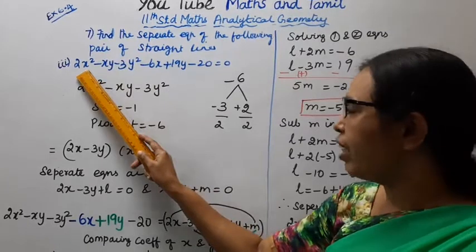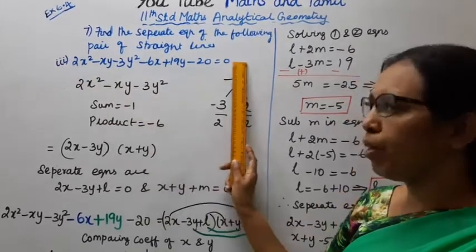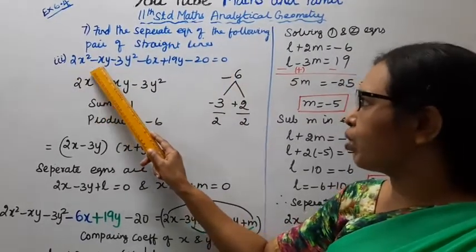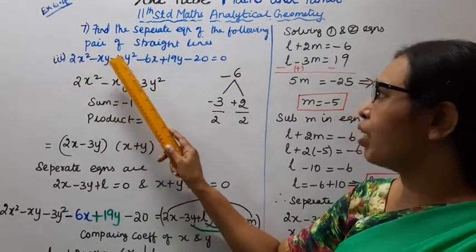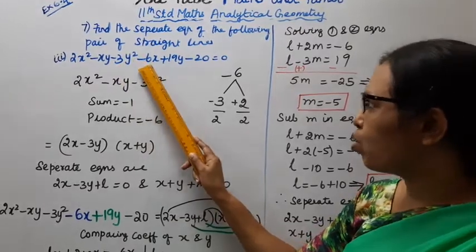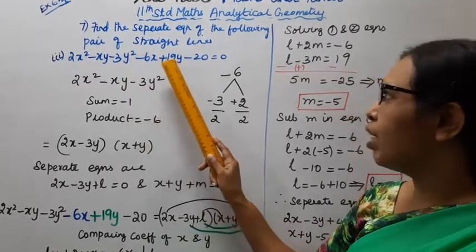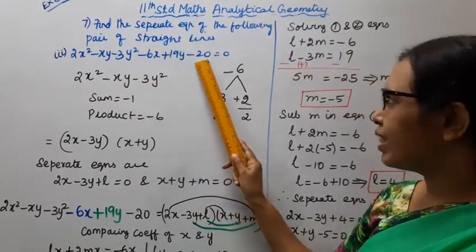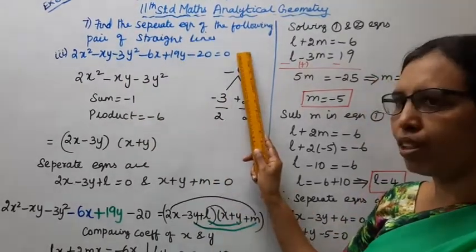This is one of the formula AX form. In the formula: Ax squared plus 2hxy plus By squared plus 2gx plus 2fy plus c equals 0.